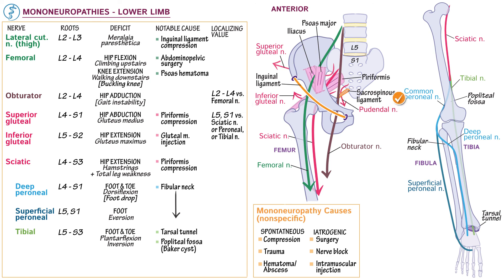Finally, show that the pudendal nerve exits the pelvis via the greater sciatic foramen, passes posterior to the sacrospinous ligament, and then re-enters via the lesser sciatic foramen. It's primarily supplied by S4, but also receives additional contributions from S2 and S3. Pudendal neuralgia affects the external urethral and anal sphincters and external genitalia, and notably occurs from the traumatic effects of childbirth. This concludes our diagram.